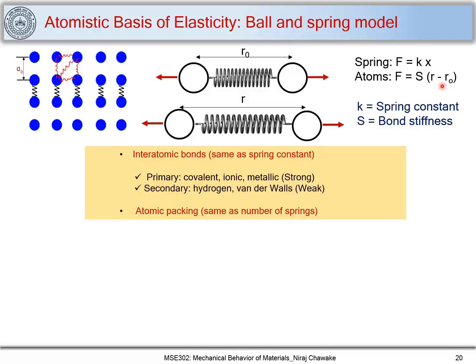The bond stiffness s changes for different bonding types. Primary bonds — covalent, ionic, and metallic — are very strong bonds, so their bond stiffness s will be higher. Secondary bonds such as hydrogen or van der Waals bonds are very weak, so their bond stiffness will be smaller. Additionally, atomic packing matters: the more the atomic packing, the more the number of springs. Bond stiffness therefore represents both the material's bonding nature and its atomic arrangement.